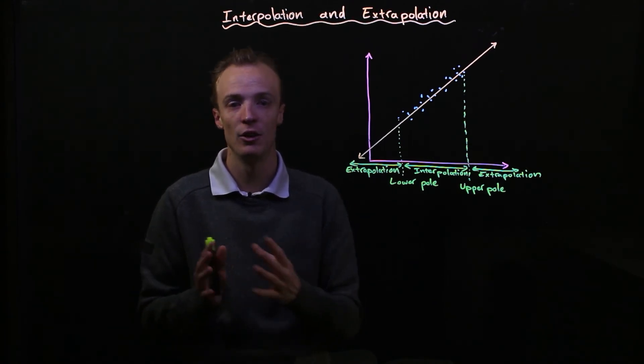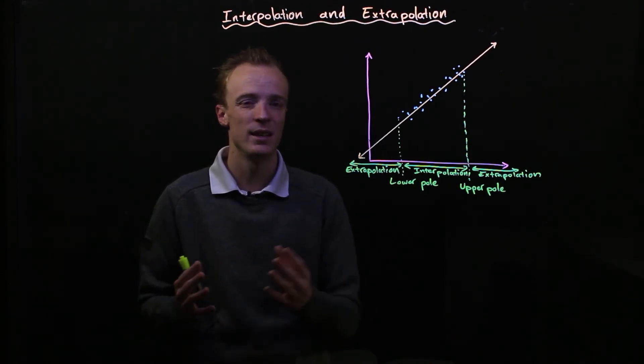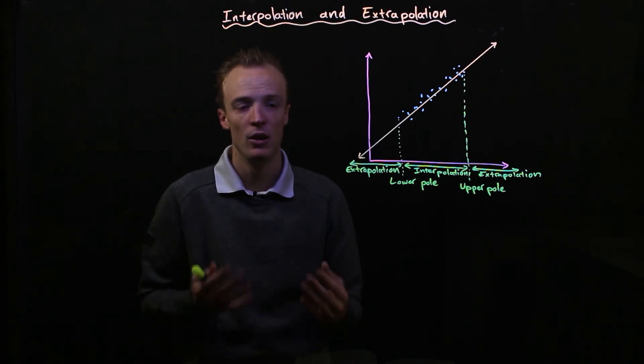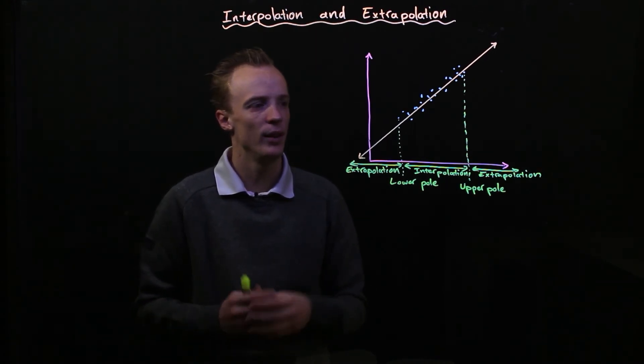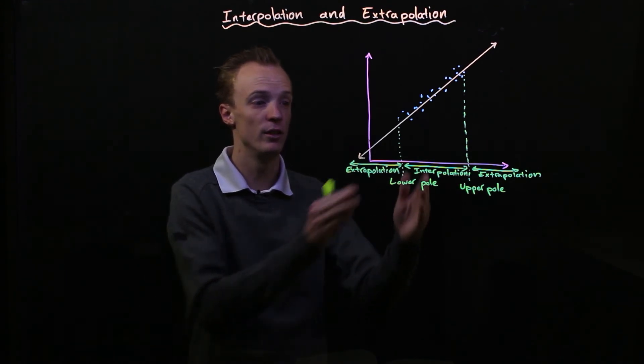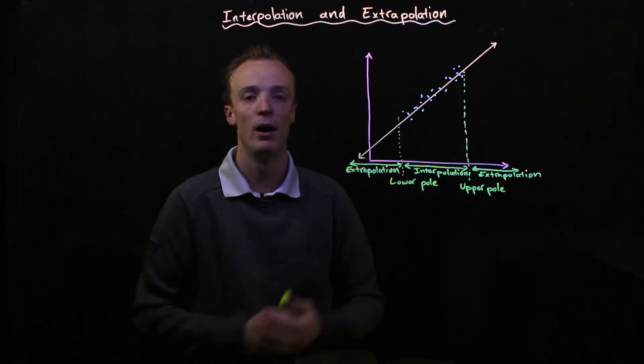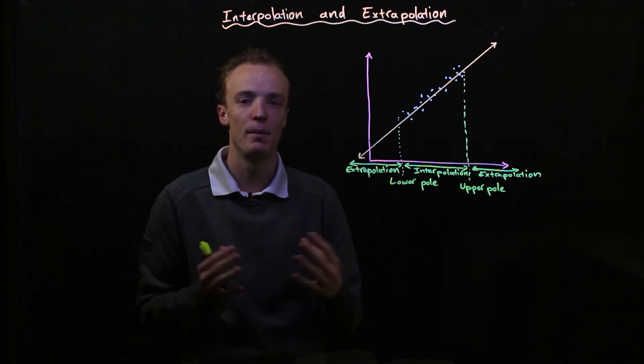So extrapolation in those situations isn't necessarily considered to be as accurate nor is it considered to be appropriate. But to summarize, interpolation is when we're making predictions inside of our lower and upper poles and extrapolation is when we're making predictions outside of our lower and upper poles.